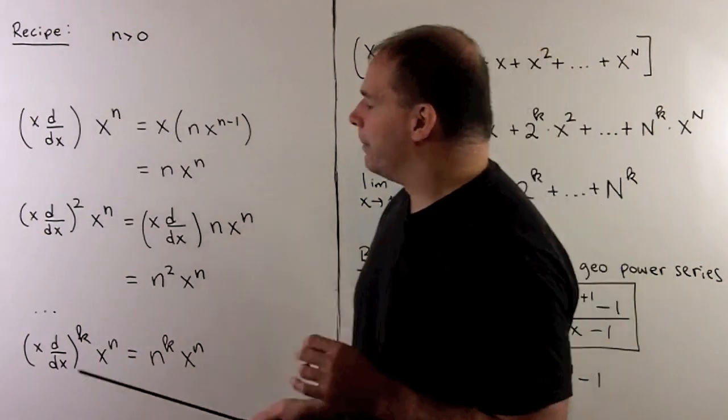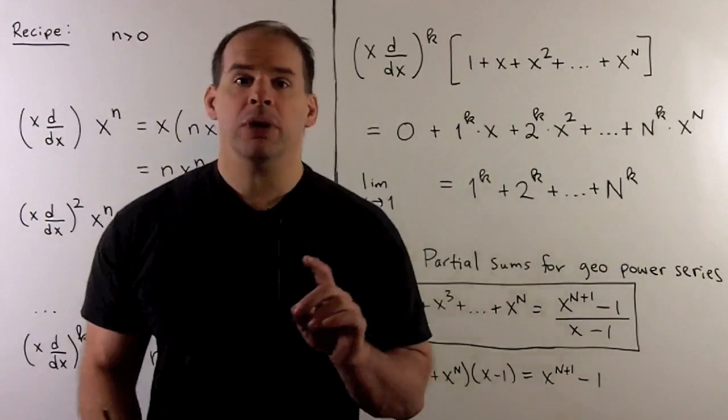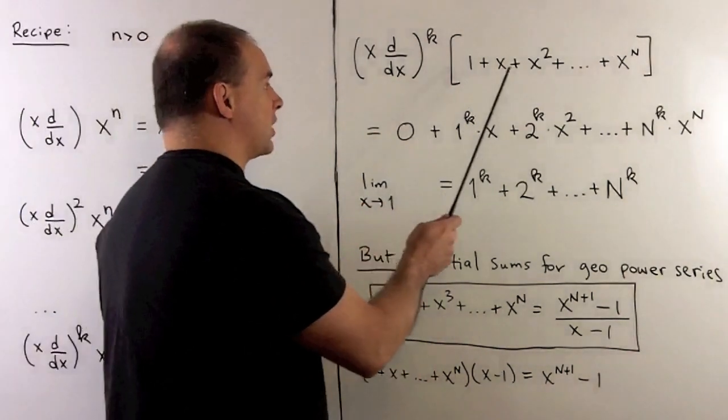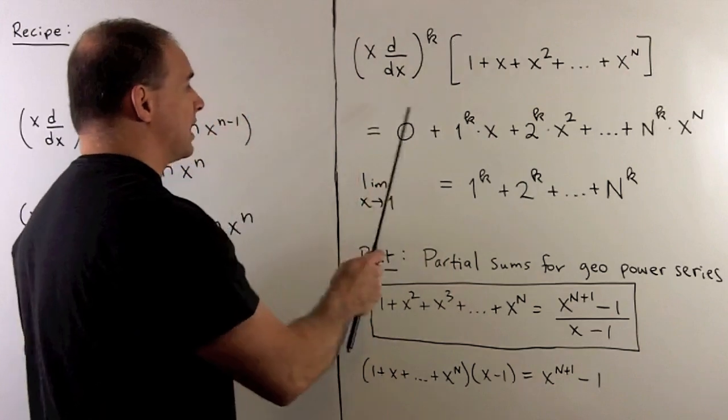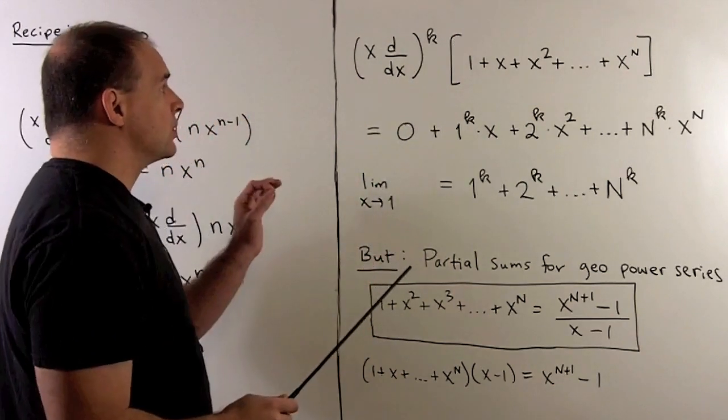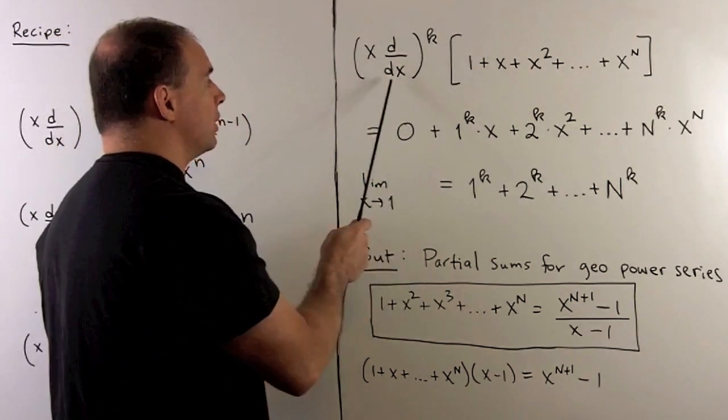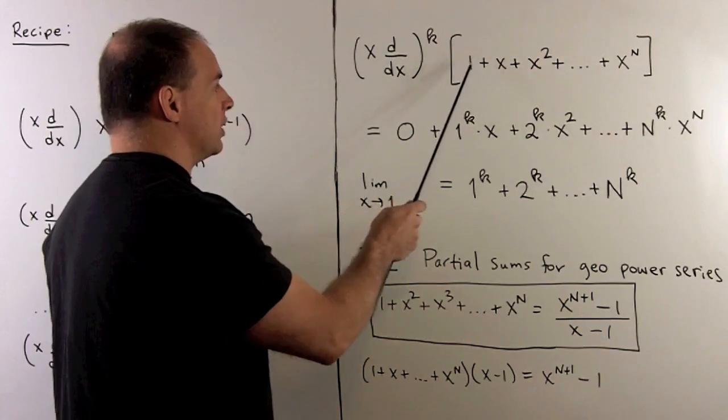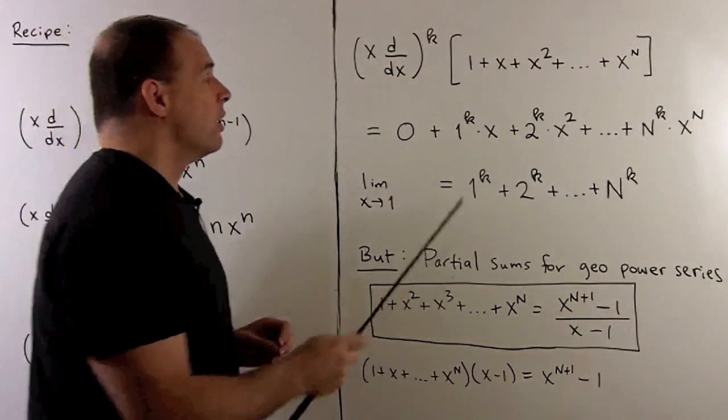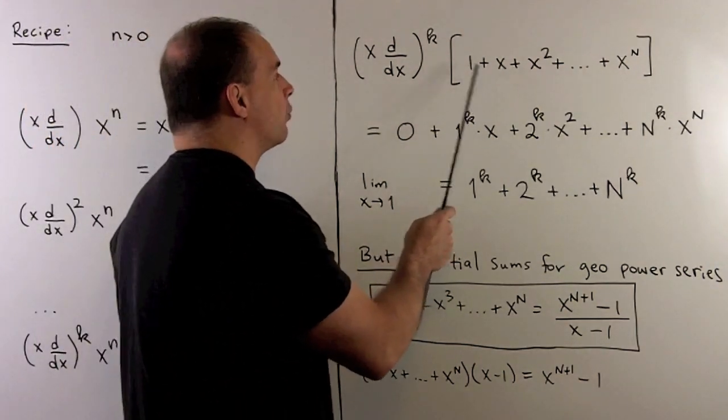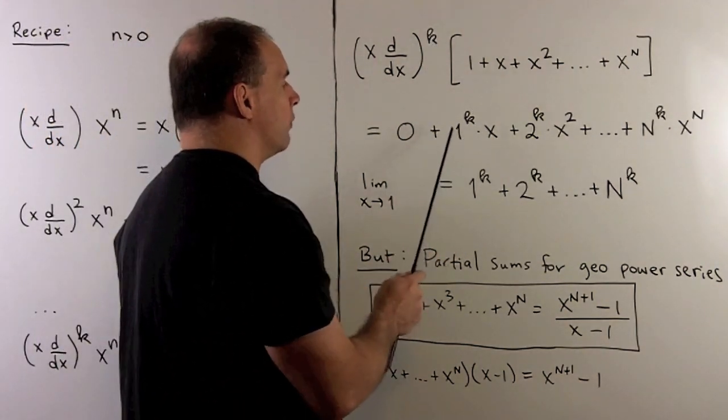Now we'll apply our operator here to the sum: 1 + x + x^2 all the way up through x^n. We apply this k times. What happens? The 1 is going to go to 0. First time we do this, d/dx sends 1 to 0, multiplying by x keeps it 0. For all the others, we just pull the exponent out raised to the kth power, so I have 1^k x + 2^k x^2, and so on.